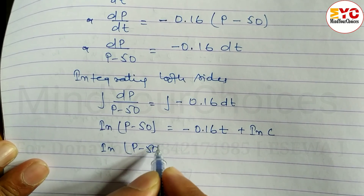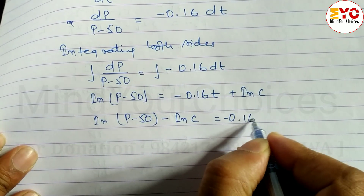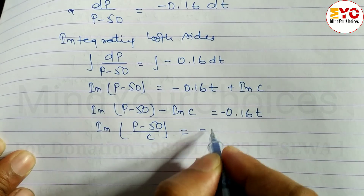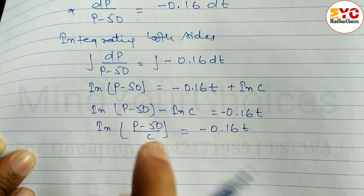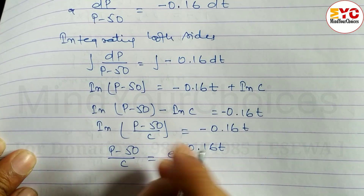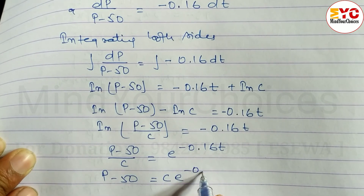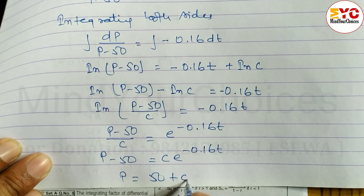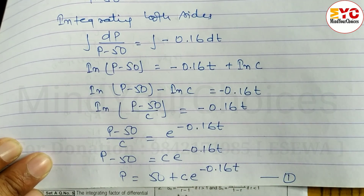This gives log((p minus 50) divided by C) equals negative 0.16t. Taking exponentials on both sides, the log cancels and we get (p minus 50) divided by C equals e to the power of negative 0.16t. Cross-multiplying: p minus 50 equals C times e to the power of negative 0.16t, so p equals 50 plus C times e to the power of negative 0.16t. Call this equation one.